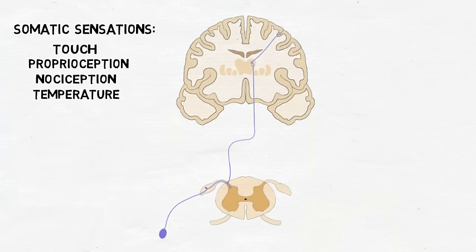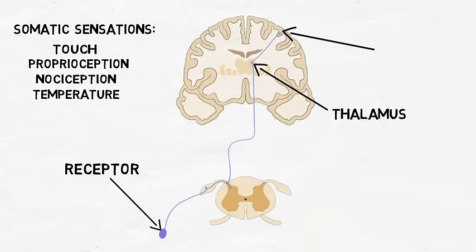When receptors detect one of these sensations, the information is sent to the thalamus, and then to the primary somatosensory cortex.